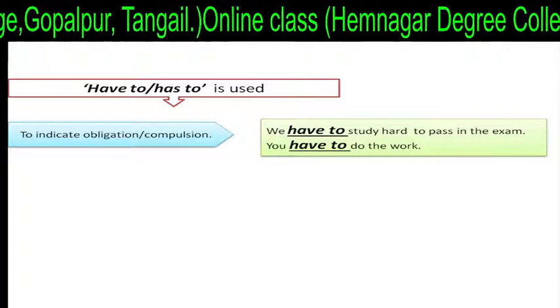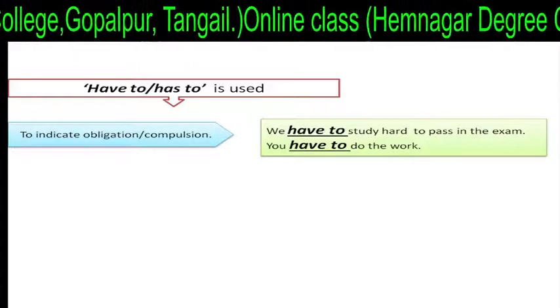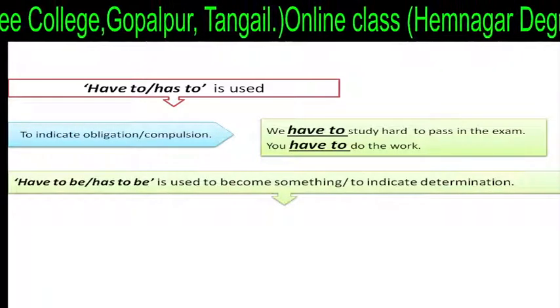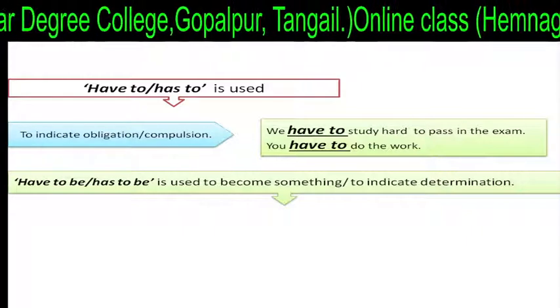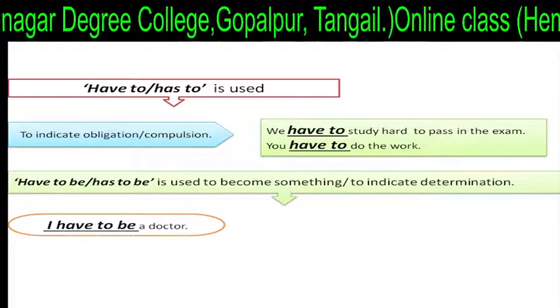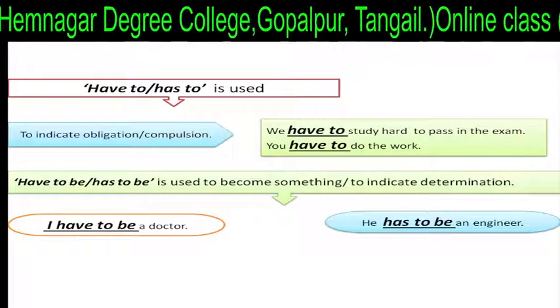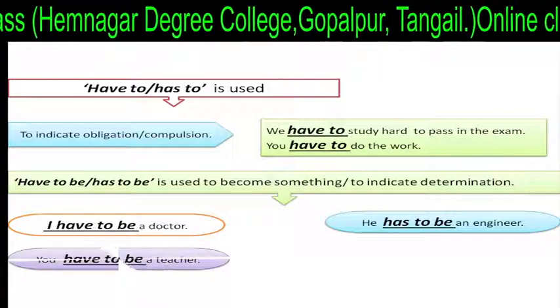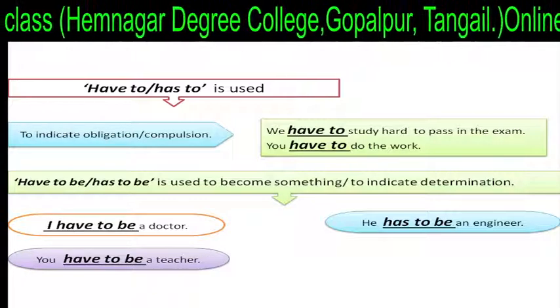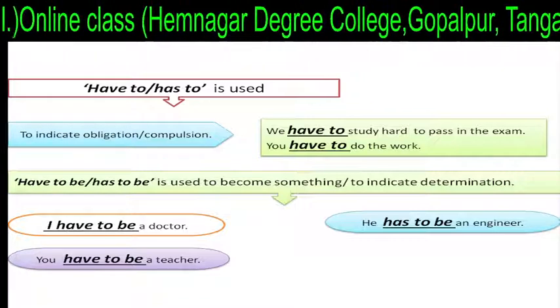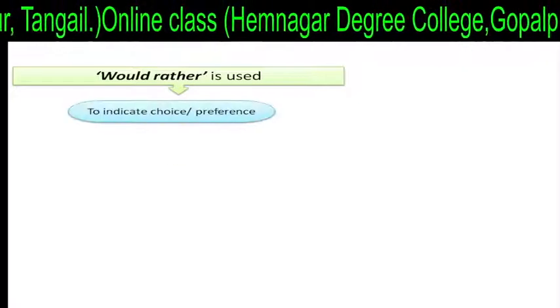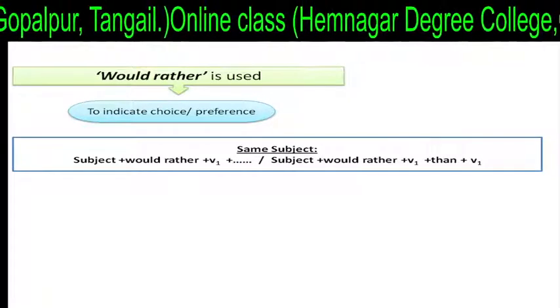Have to or has to is used to indicate obligation or compulsion. For example: 'We have to study hard.' 'You have to do the work.' Have to be or has to be is used to indicate becoming something or determination. For example: 'I have to be a doctor.' 'He has to be an engineer.' 'You have to be a teacher.' Have to or has to is used in present tense, but had to is used in past tense.